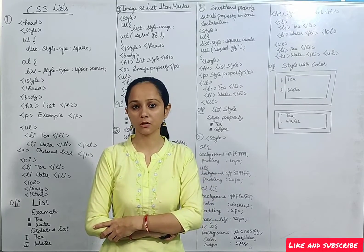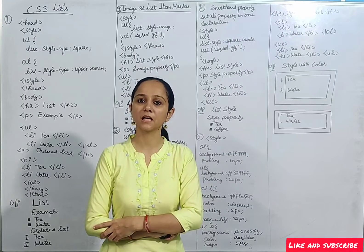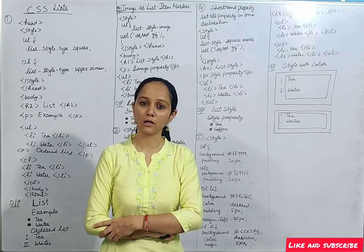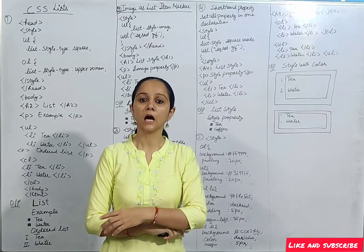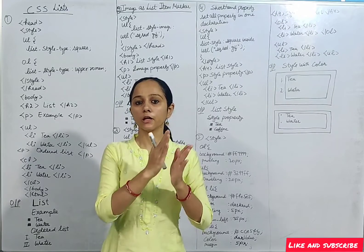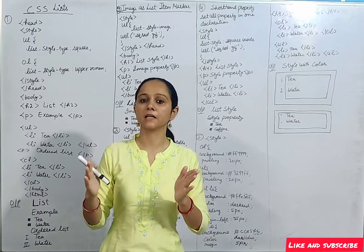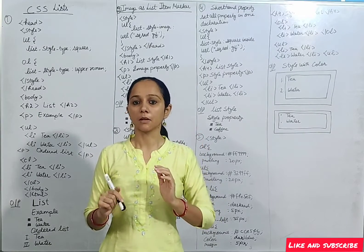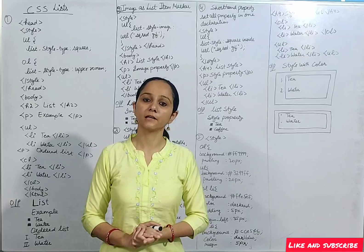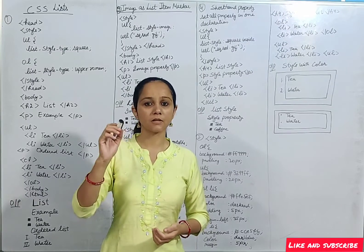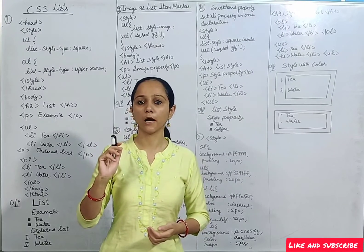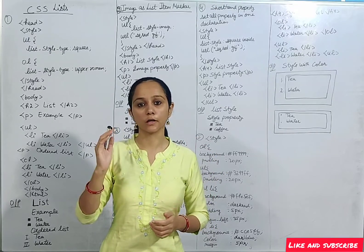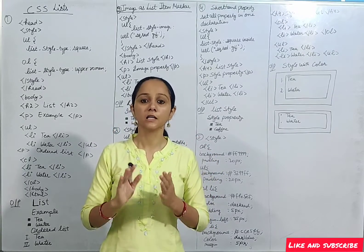Our list is basically two types: unordered and ordered lists. In the unordered list, there is no numeric or alphabetical order. Content is displayed in the form of bullets. Bullets can be any shape — like square, rectangle, triangle, etc.